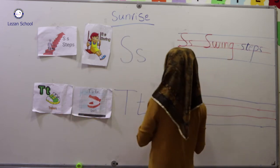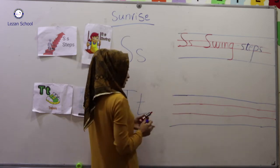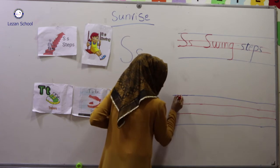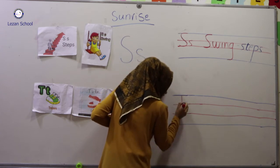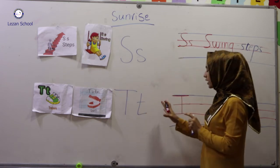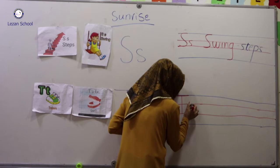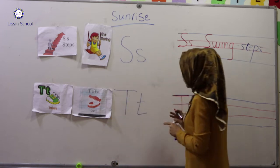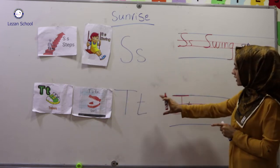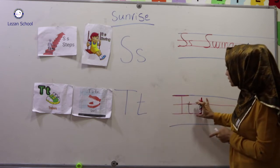Let us know how to write it down T capital and T small on these four lines. Look, T capital — we need these three lines. This is T capital. How can we write it down T small? This is T small. We only need these two lines. But for T capital, we need three lines; for small, we need only two lines.